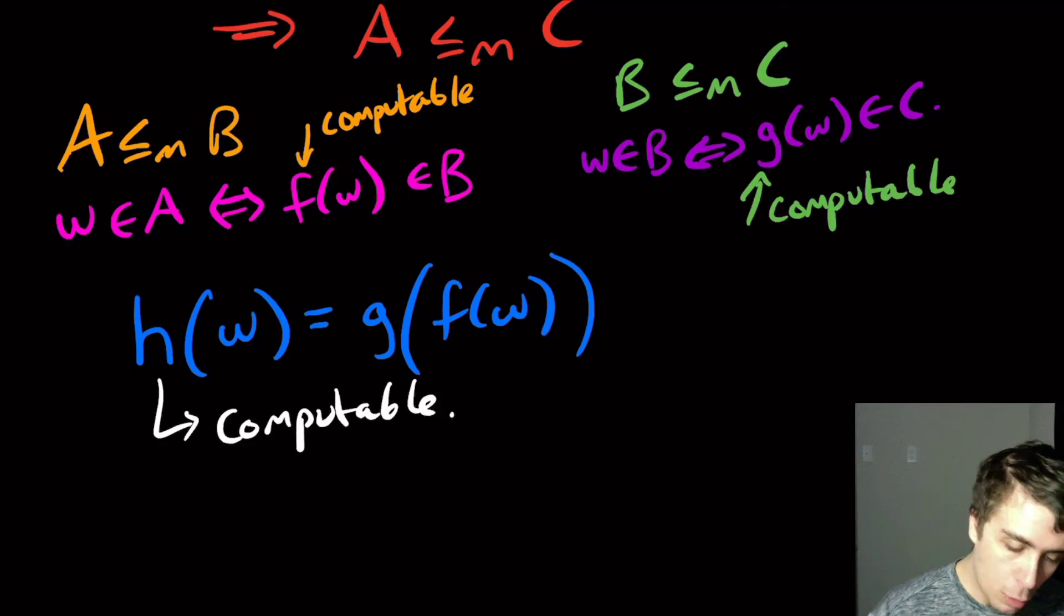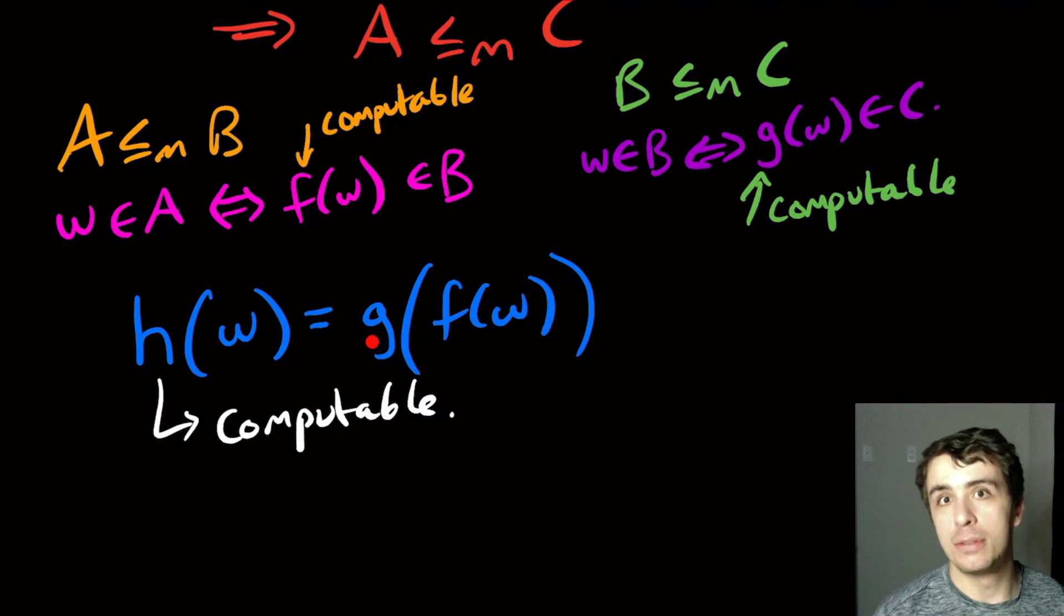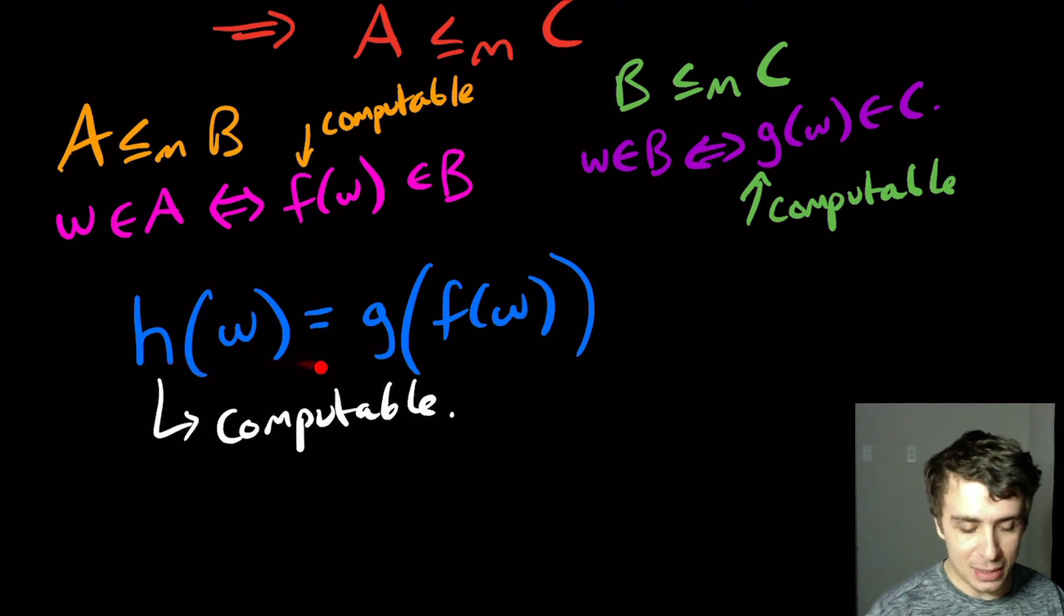So we know that F produces things that are in B, and G takes things that are inputs of B to correspond to inputs of C. And so therefore, if I take W, which is an input of A, on the right side, I'm going to get something that belongs to C,